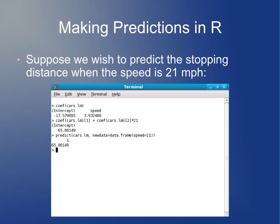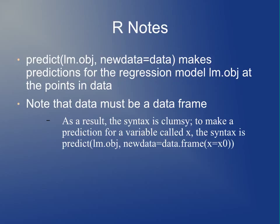A slightly easier way to do it in R, though with somewhat clunky syntax, is the predict command. You say predict(cars.lm, newdata = data.frame(speed = 21)) and get the same number. In general, predict(lm.object, newdata = some_new_data) makes predictions at the new data points. It's important that newdata must be a data frame. So if you have a variable x and want predictions when x = x0, you say predict(lm.object, newdata = data.frame(x = x0)). You can just copy this syntax for the homework.